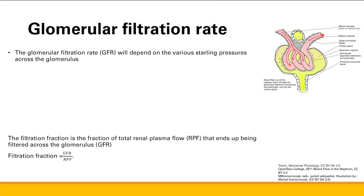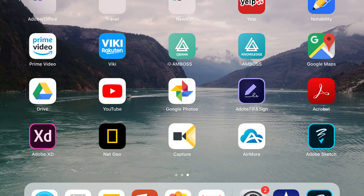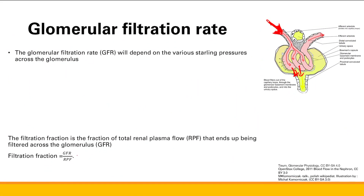Now let's talk about the filtration fraction — the fraction of total renal plasma flow that ends up being filtered across the glomerulus. Total renal plasma flow is all the blood and plasma that flows to this kidney, to this specific renal tubule. The filtration fraction is GFR over RPF. Normally, GFR is around 20% of total renal plasma flow, so 80% goes out the efferent arteriole and 20% gets filtered into the renal tubules.